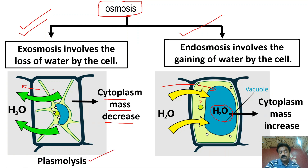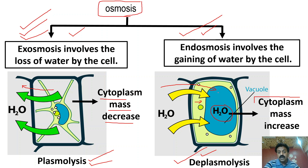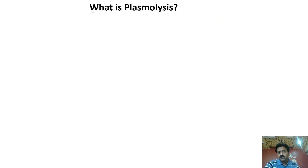Is condition ko hum kehte hain plasmolysis — plasmolysis Exosmosis ki wajah se hota hai. Aur jahan pe cytoplasm ka mass ya protoplasm ka mass increase ho raha hai, is condition ko hum kehte hain deplasmolysis. Toh jab bhi cell mein Exosmosis hoga, toh plasmolysis hoga; jab bhi endosmosis hoga, toh deplasmolysis hoga. Recovery from plasmolysis is called deplasmolysis. Sabse pehle aapka dhyan hona chahiye Exosmosis aur endosmosis pe.